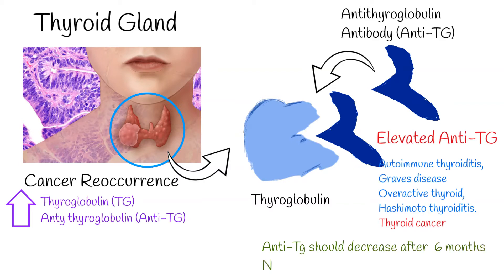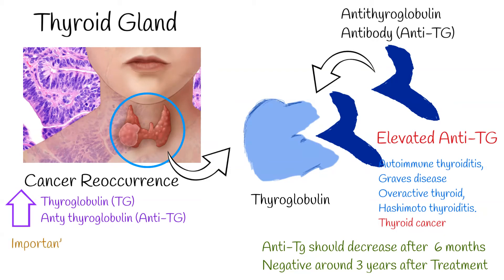According to some studies, in excellent cases antithyroglobulin should lower over 6 months after cancer treatment, after thyroidectomy and radioactive iodine treatment. In around 3 years it should be negative, but in many cases it stays stable or elevated. An important elevation means a rise of more than 50% after the initial or last measurement, while an important reduction is a decrease of more than 50% — in perfect cases becoming negative.